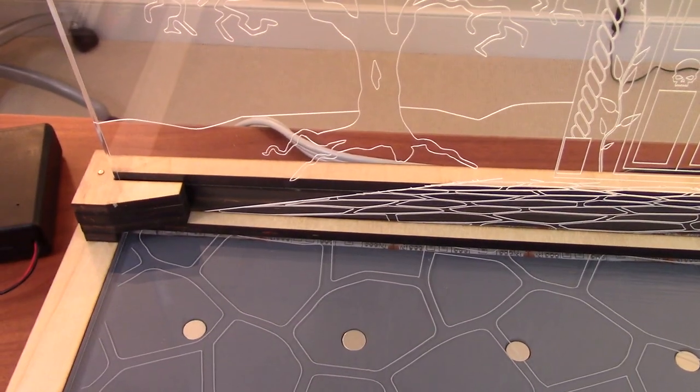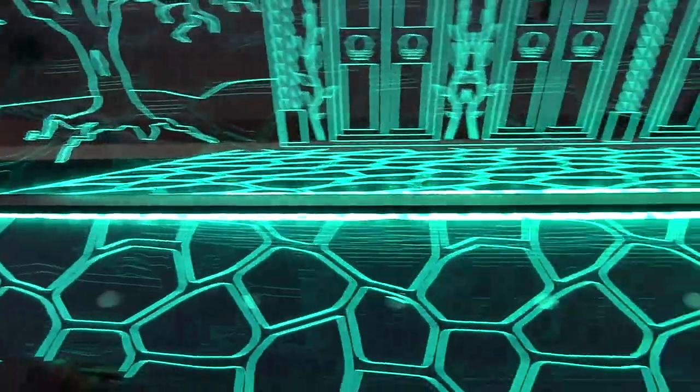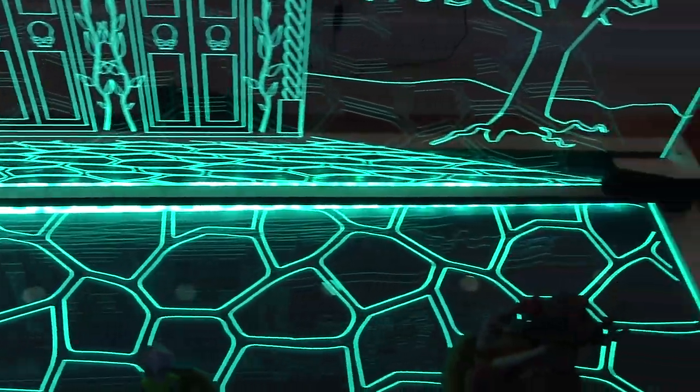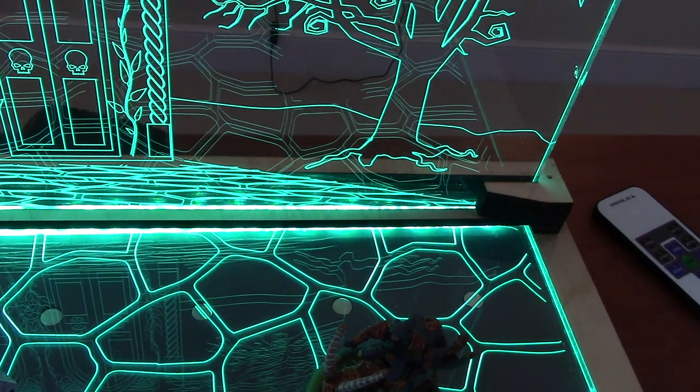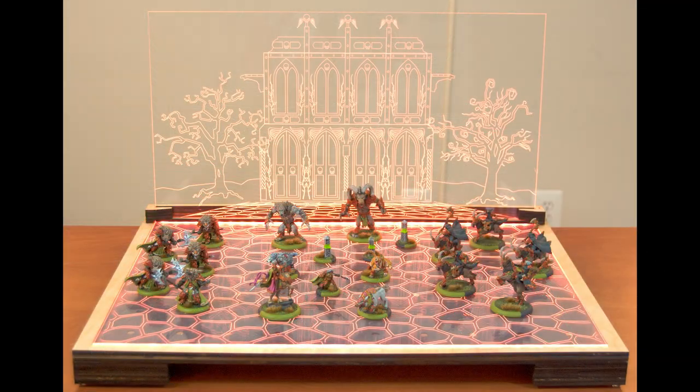When everything is together you can slide in that detachable piece of wood I showed you in the design. That blocks the direct glare of the light and helps keep the light contained to drive the edge lit acrylic.